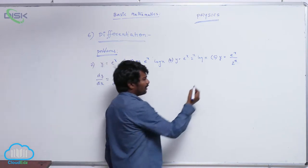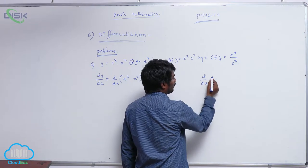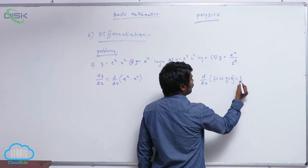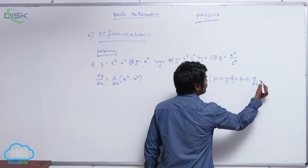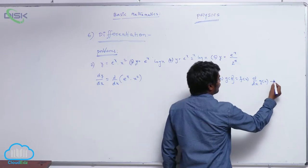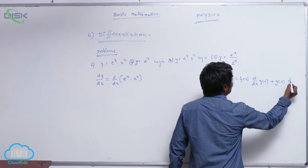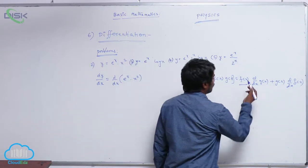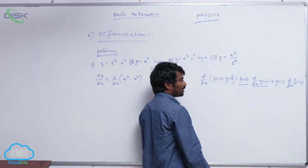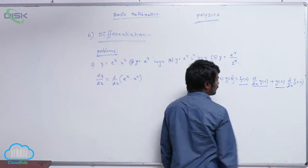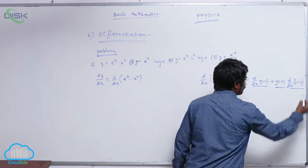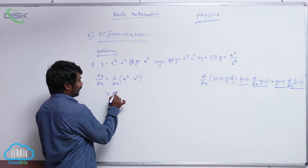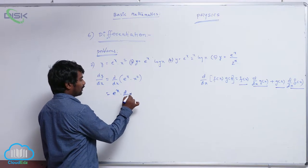The formula for d by dx of f of x into g of x is equal to f of x into d by dx of g of x, plus g of x into d by dx of f of x. So here, keep f of x undisturbed and differentiate g of x with respect to x, and keep g of x undisturbed and differentiate f of x with respect to x.